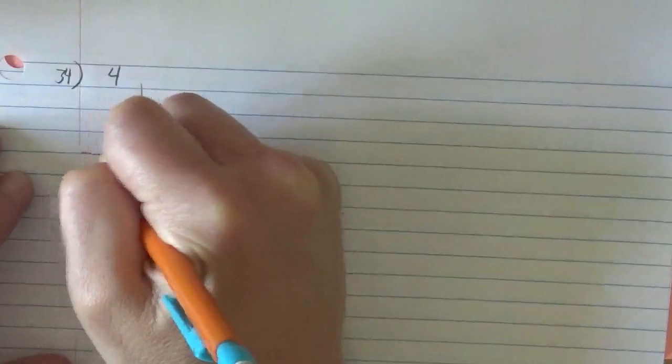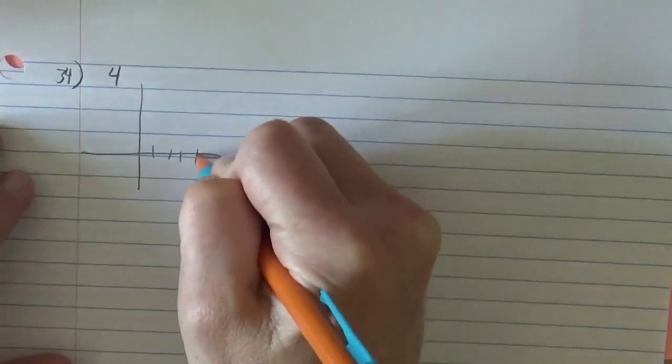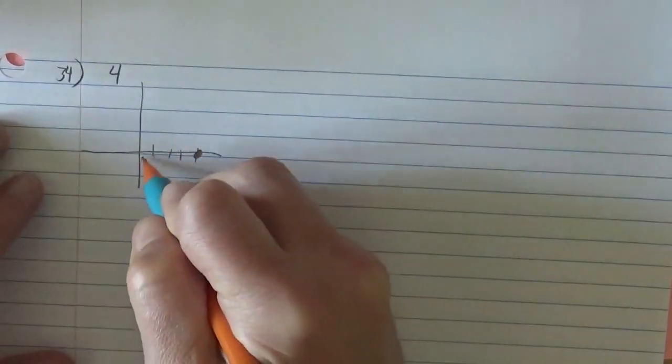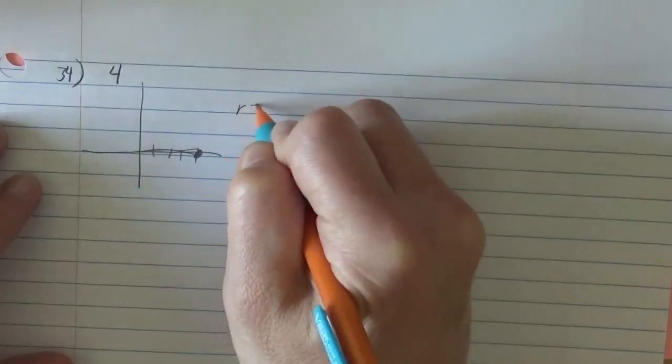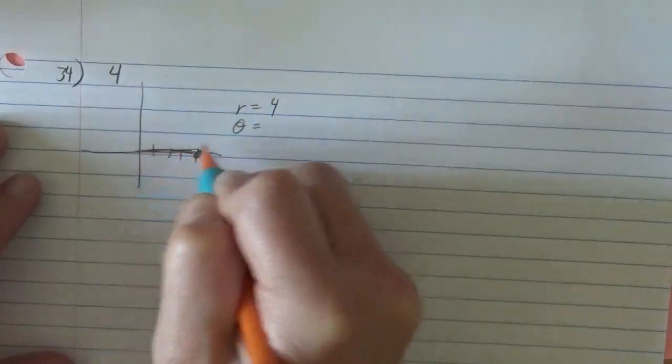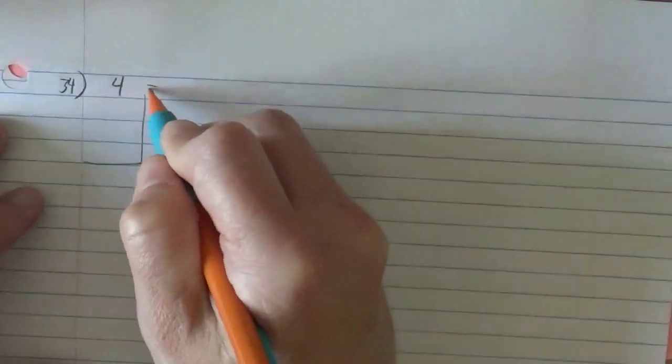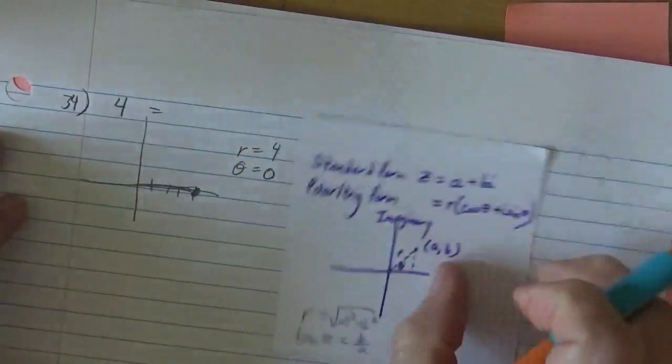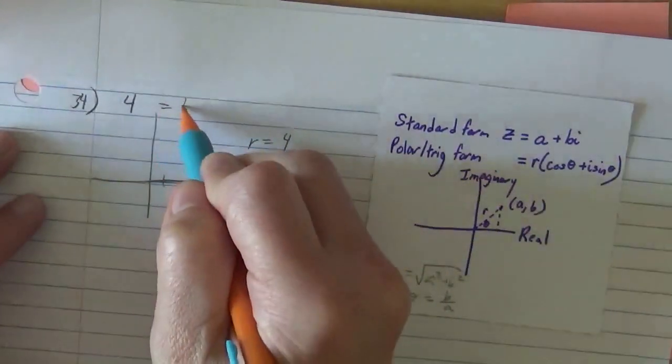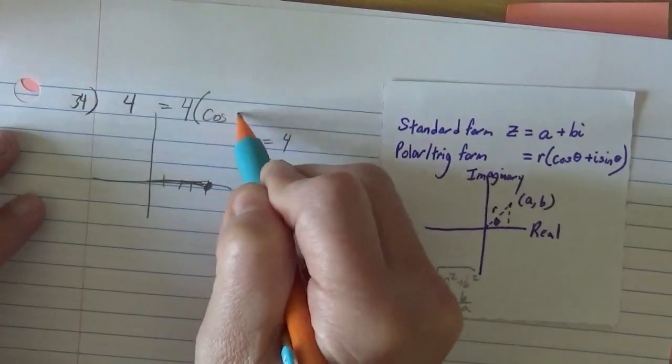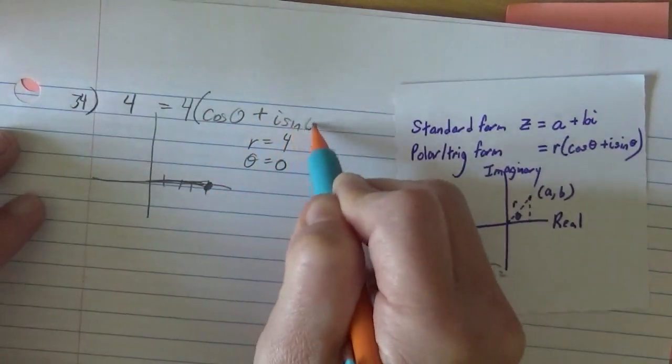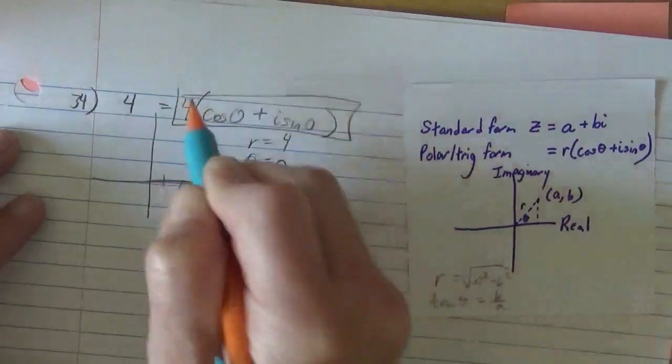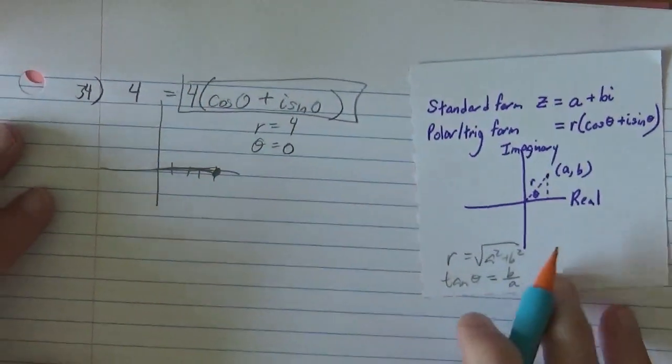We keep going. So if I do 34, they just say it's 4. So if it's just 4, that's just 4 on the real. And I can tell that my radius would certainly be 4, and that my angle would just be 0. So if I write this as r cosine theta plus i sine theta, I just get that. So that's quite nice.